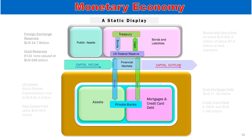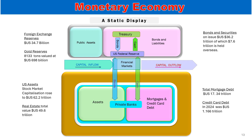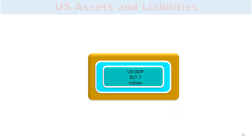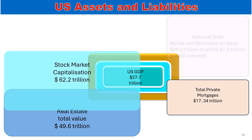In these graphics, the Econograph displays the U.S. monetary economy in a static context, highlighting key financial flows and balances. The graphics illustrate three primary financial flows: capital inflows and outflows through the financial markets; new money entering the Treasury in exchange for newly issued bonds; and bonds and money flowing between banks and financial markets. Additionally, the graphics present a balance sheet perspective, displaying public and private assets and liabilities. This is a graphic display of the accumulated assets and liabilities for the U.S. economy.